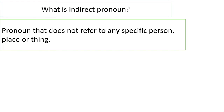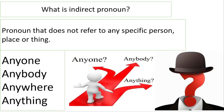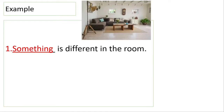For example: anyone, anybody, anywhere, anything. You can see these words are not referring to any person specifically, nor any particular place. So these words are known as indirect pronouns. Let's see some examples.